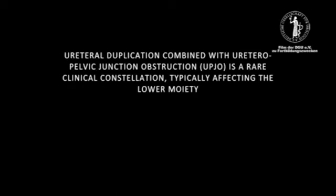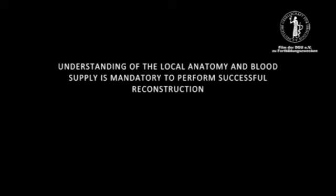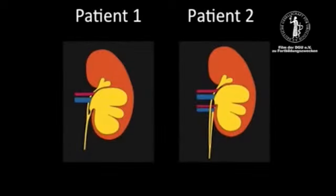Uretropelvic junction obstruction (UPJO) of the lower moiety in a duplex kidney is a rare clinical constellation, typically affecting the lower moiety. Understanding of the local anatomy and blood supply is mandatory to perform successful reconstruction. Our video illustrates preoperative workup, minimally invasive surgical management, and follow-up in two patients with a lower pole UPJO in a duplex kidney but with differing proximal incomplete ureteral duplications.